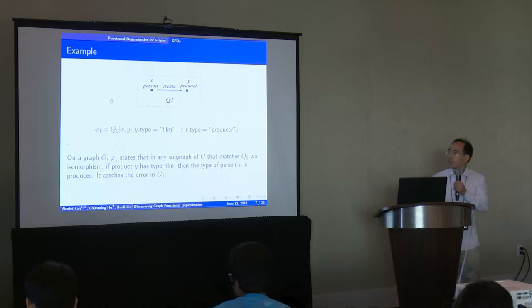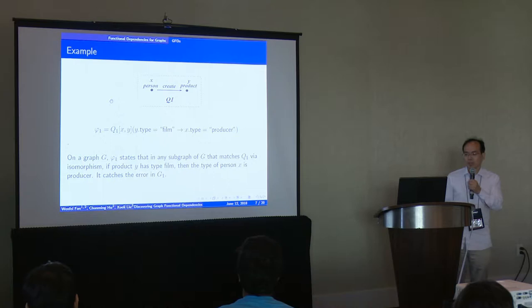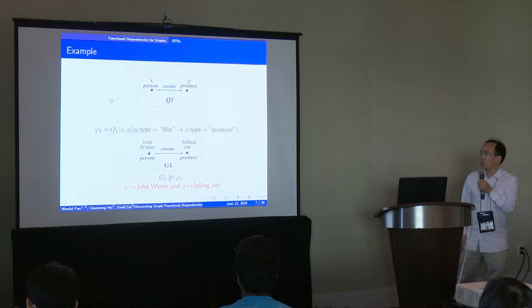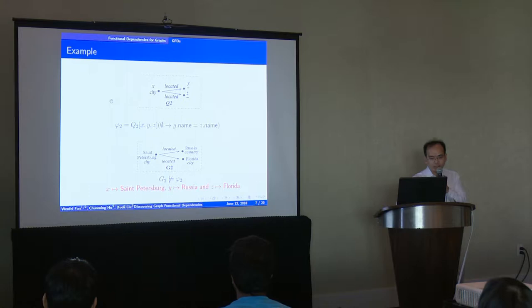Now we can use the GFD to catch the inconsistencies above. We define this GFD. It states that in any subgraph of G that matches Q1 by isomorphism, if product Y has type film, then the type of person X is a producer. It catches the inconsistencies above by matching X to John Winter and Y to Sell Out.